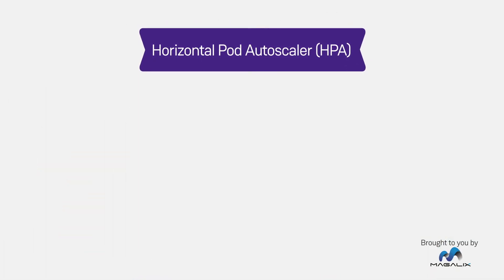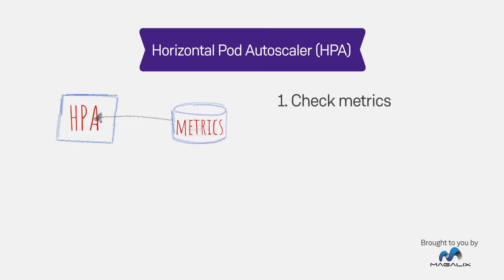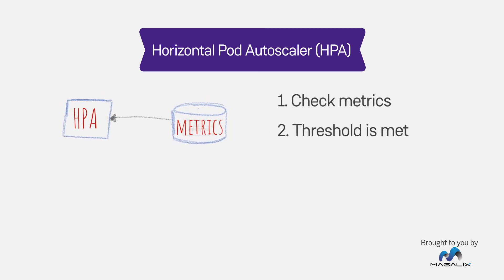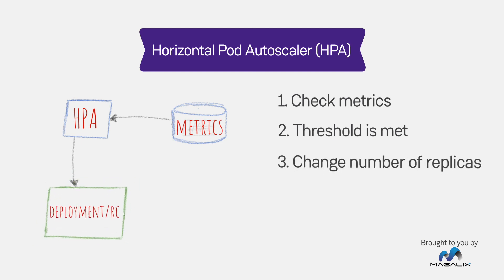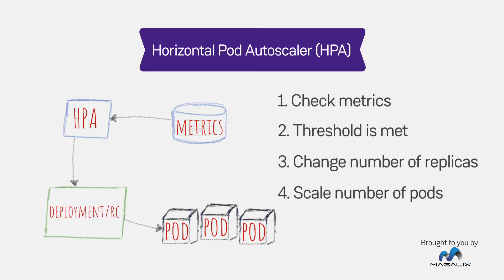The Horizontal Pod Autoscaler, or HPA, scales the number of pod replicas. HPA continuously checks pre-configured metric values, then attempts to increase the number of pods if the specific threshold is met.